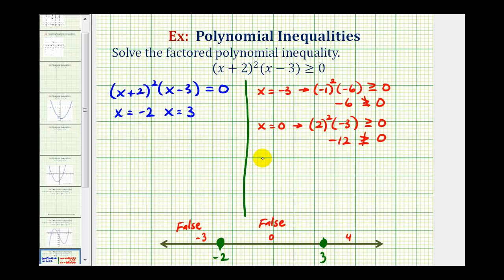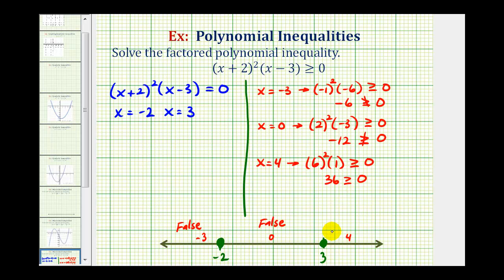For x = 4: (4 + 2)² × (4 − 3) = 6² × 1 = 36 × 1 = 36. Thirty-six is greater than or equal to zero, so this is true. The interval on the right is part of the solution.